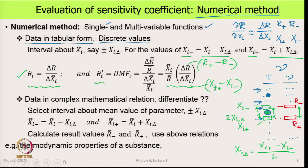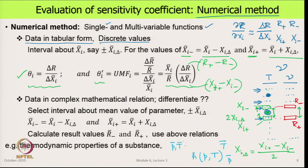If there are more than one variable — for example, enthalpy given in a table as a function of pressure and temperature — we do the same thing. While calculating the partial derivative with respect to pressure, we hold temperature constant at T̄; while calculating the sensitivity coefficient for temperature, we keep pressure constant at its mean value P̄. The point at which we want the sensitivity coefficient is therefore (P̄, T̄), which is (x̄_1, x̄_2).